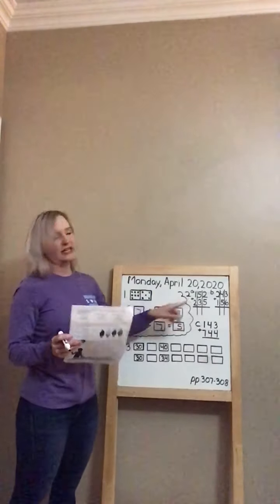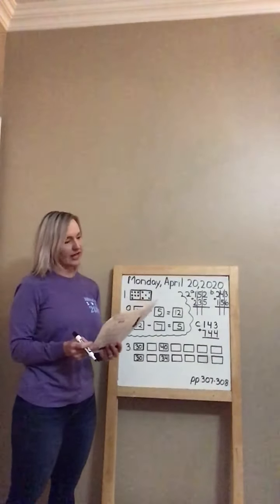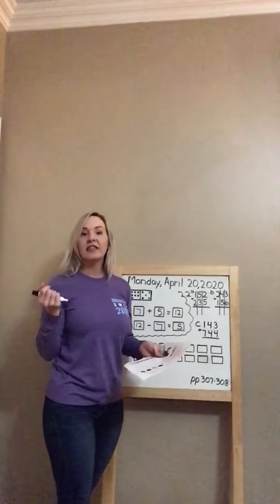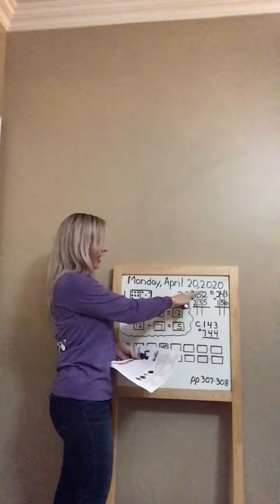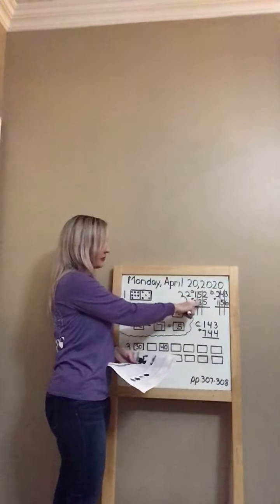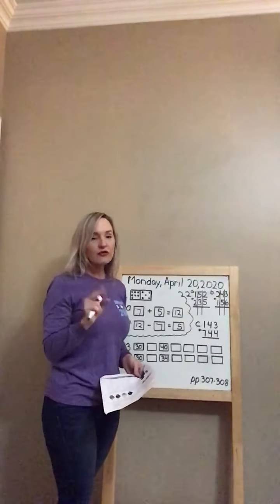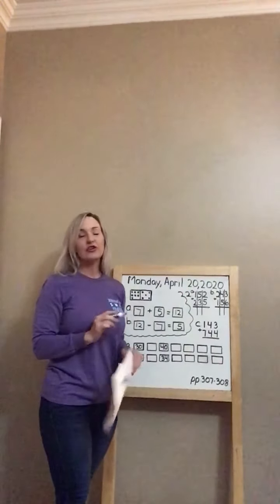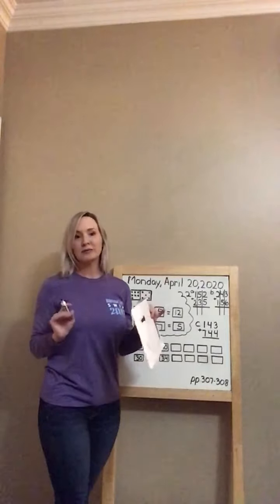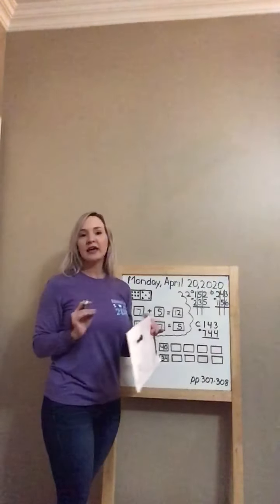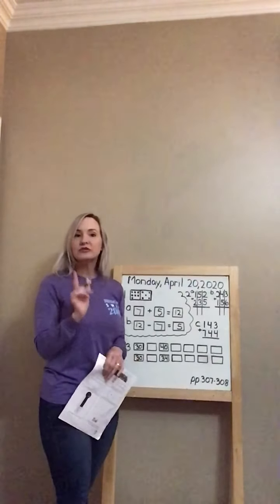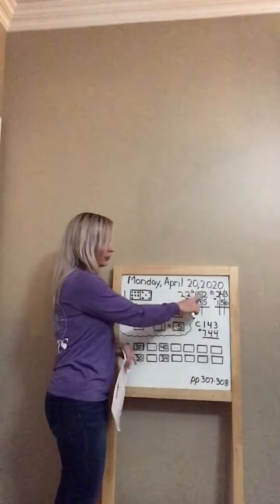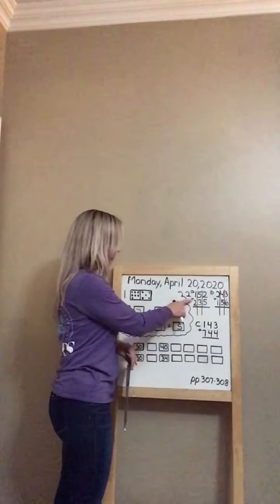On your worksheet, page 308, you are adding three-digit numbers. That means your numbers have a number in the ones place, the tens place, and the hundreds place. You've been adding two-digit numbers — this will be the first time you've added three-digit numbers. You are not going to have any problems with this. Just like when you add two-digit numbers, you start in your ones place.